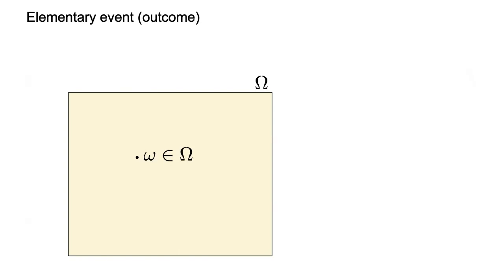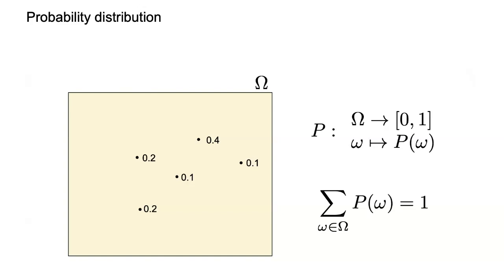There are many ways to look at the omega space — you could view it as a set of all possible worlds. Every elementary event is one possible world, and we are in one of them but we just don't know which one. On top of this omega there is a measure — technically called a measure by mathematicians — a function that assigns a number between zero and one to every elementary event, and the sum over the entire omega set must equal one.